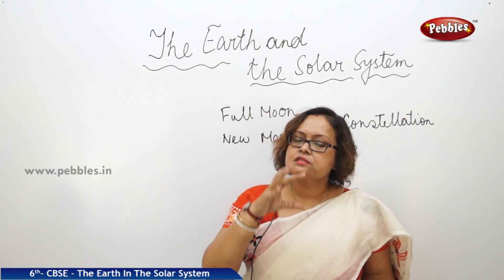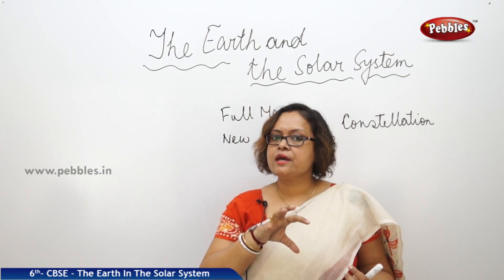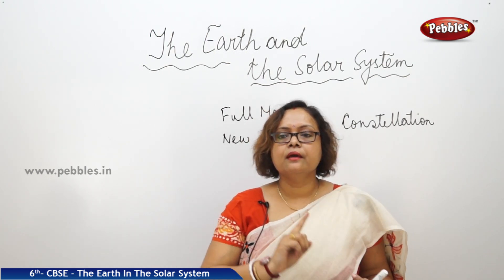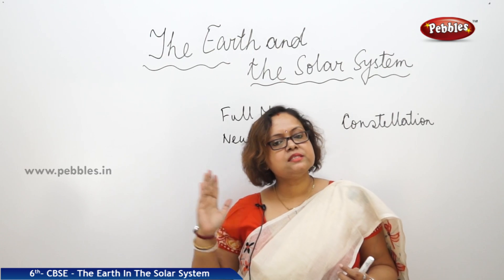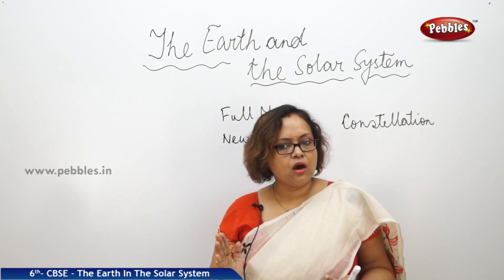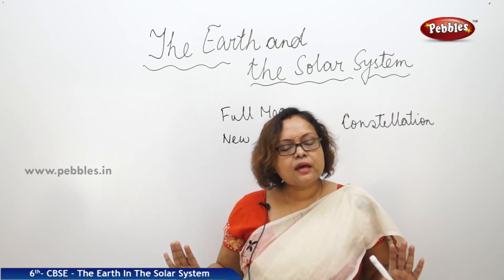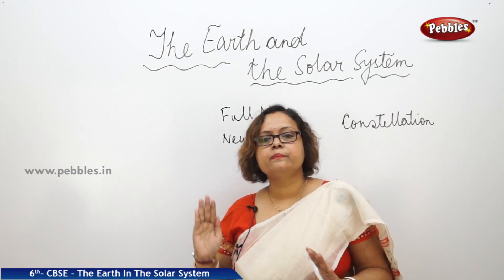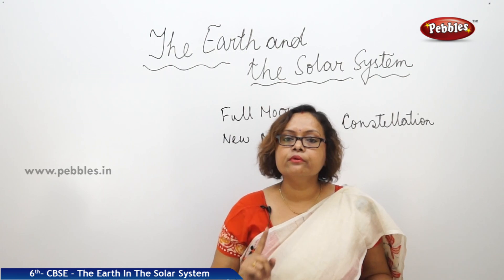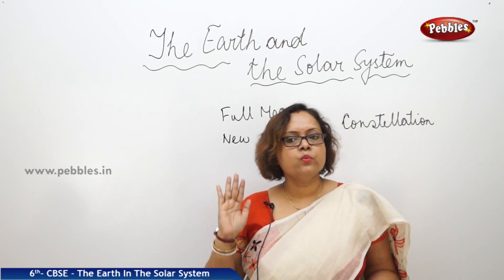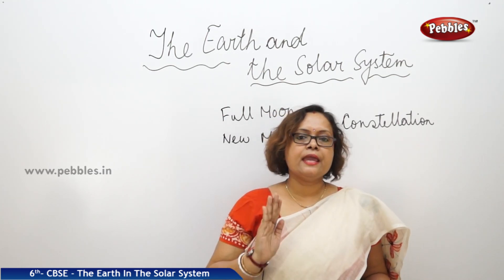Our Earth is such a planet. Sun is the star which has a total of eight planets now revolving around it. It was nine before, but now Pluto, due to its size, we are no more considering Pluto as a planet. Rather, we call Pluto a dwarf planet — it lost its position as a planet. So now we have a total of eight planets.